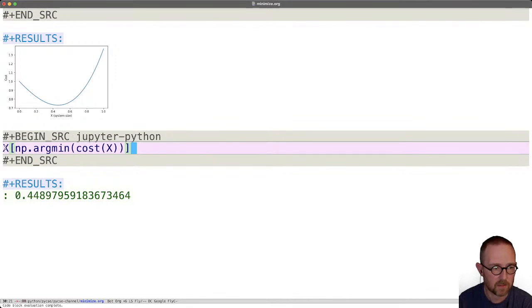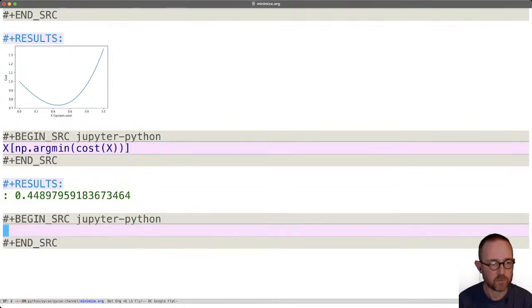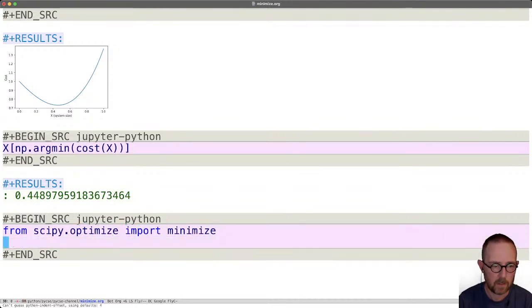It's not going to be exactly the same as this and this of course is going to depend on how fine your x grid is. Okay, so I want to show you how to use minimize for this because it's a wonderful tool. So from scipy.optimize import minimize and let's see what happens in minimize.